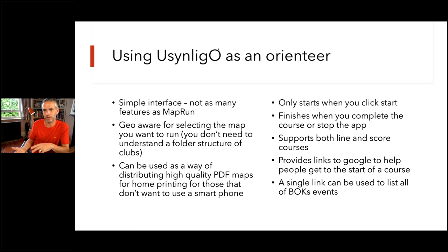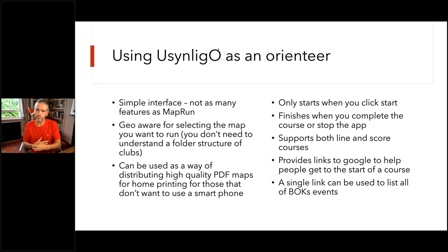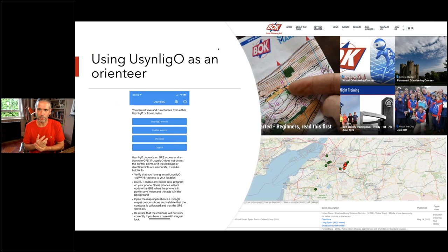The website and app are both linked into Google, so you get directions to the course location, and within the app you can overlay your run over a Google Map to see where you went. The app also lets you categorize courses — we've categorized all our runs as BOCK events, which means we can provide members with a single link to all Bristol Orienteering Club courses.